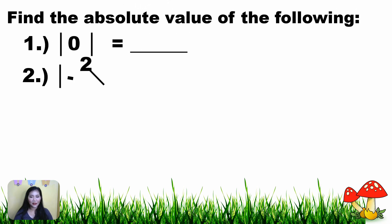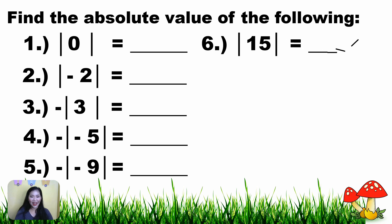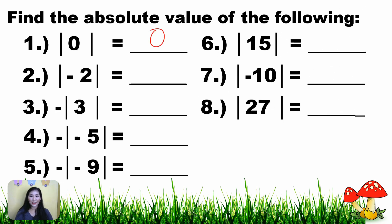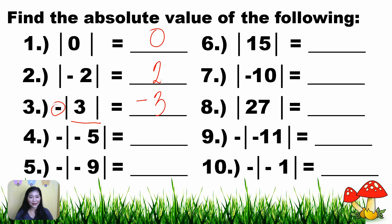Find the absolute value of the following. Number one: the absolute value of zero — the answer is zero. Number two: the absolute value of negative two — that is two. Number three: the negative absolute value of three — there's a negative outside, so the answer is negative three. Number four: the negative absolute value of negative five — the answer is negative five. Number five: the negative absolute value of negative nine — the answer is negative nine.